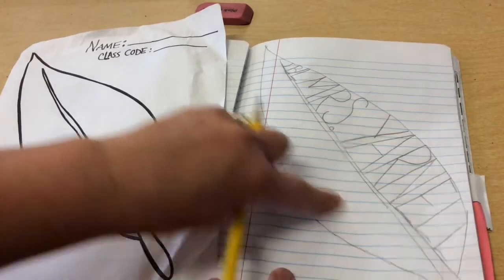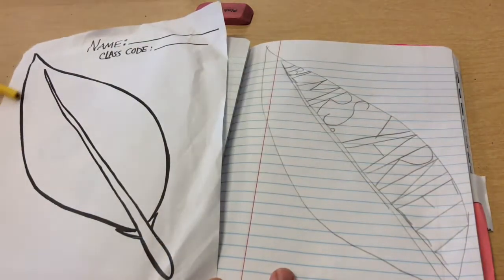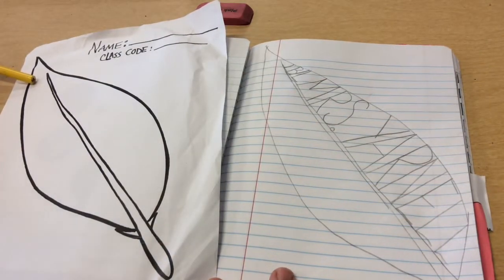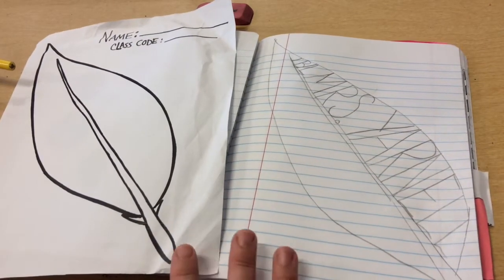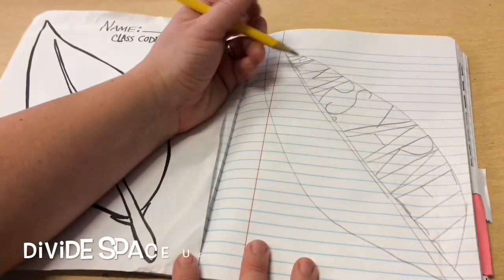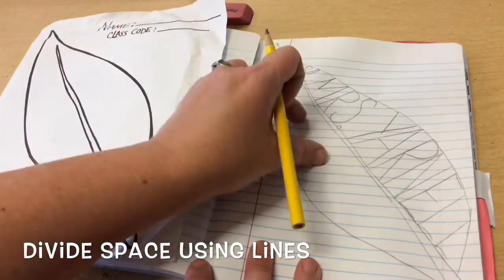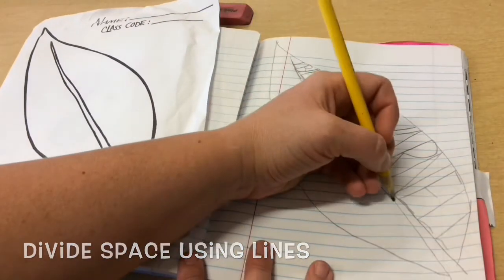And now I have all of this space here where I want to come up with three to four different patterns that I can use to fill that space. And one way to divide the space into different areas is to draw lines.